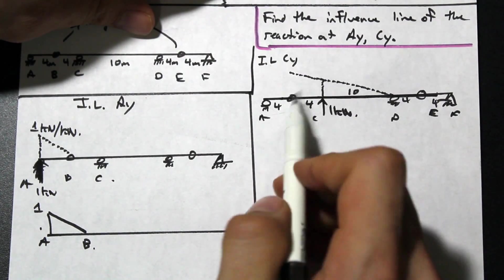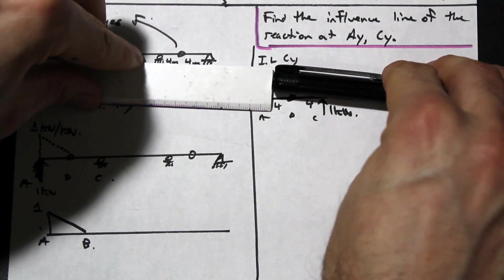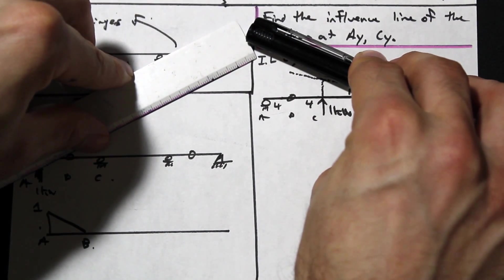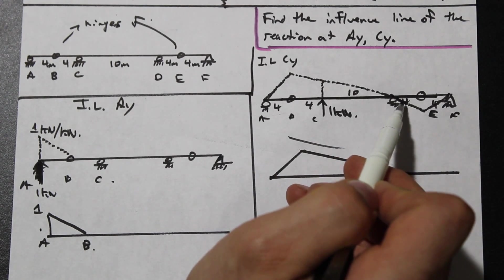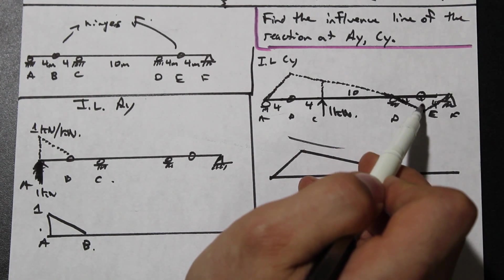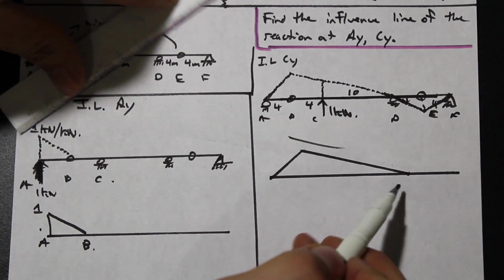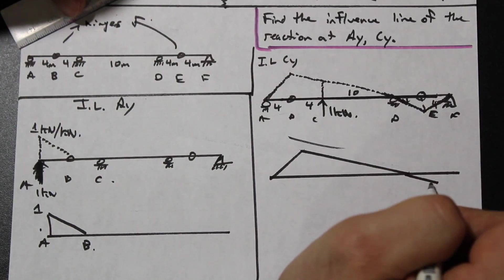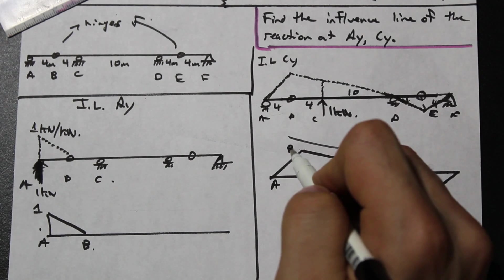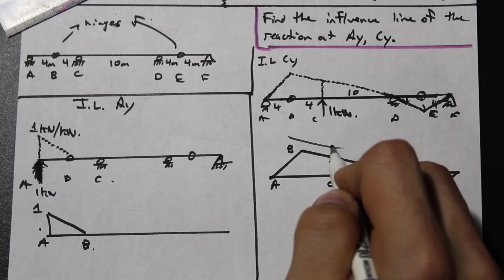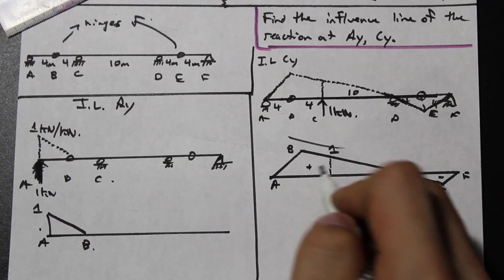When we reach a hinge in the deflected shape, the hinge causes an inflection point — it changes the direction of the deflected shape. So after the first hinge the shape goes downward, continues past D to the next hinge, then turns upward toward F. We trace this deflected shape and label the points: A, B, C is one, D, then E and F with negative and positive regions.